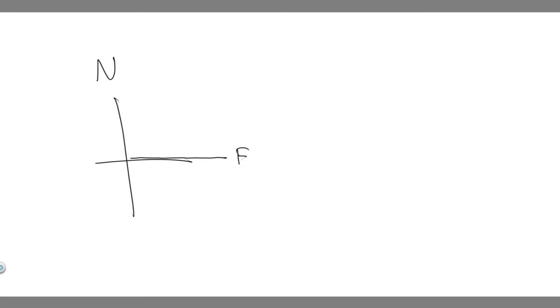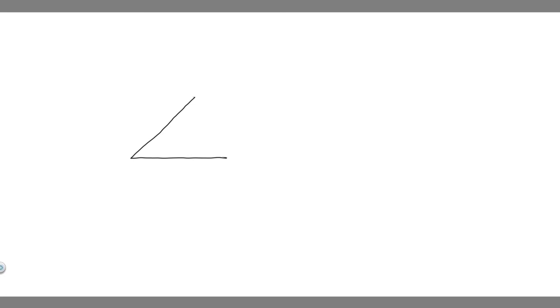So let's go ahead and draw what's going on. We know that this person is going to walk north of east. So imagine this line — north of east. So north, east, south, west. They're going to walk this direction, north of east, and they say 3.1 kilometers. The angle is 25 degrees, and it's north of east because this is the east direction and they're going 25 degrees north of it.